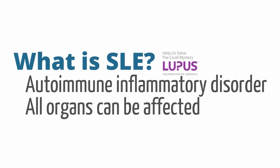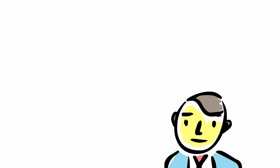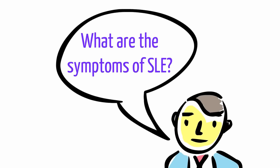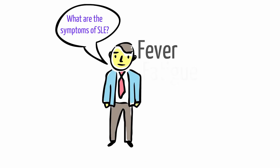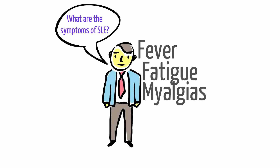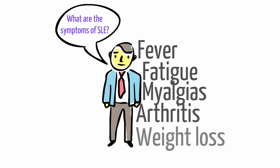As the name suggests, SLE is a systemic autoimmune disorder that causes inflammation and affects all the major organs of the body. Since lupus is a systemic inflammatory disorder, lupus commonly presents with a multitude of generalized symptoms, making the differential diagnosis quite broad. Some common general symptoms include fever, fatigue, myalgias, arthritis, and weight loss.